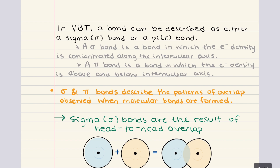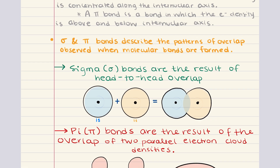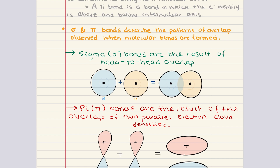When two atoms bond to form a compound, their atomic orbitals interact to form molecular orbitals. A molecular orbital describes the probability of finding bonding electrons in a given space, and this formation is described by the overlap of two atomic orbitals — the greater the overlap, the stronger the bond. The signs of the lobes of these orbitals, positive and negative, play a crucial role in bonding. If the phases of the two overlapping atomic orbitals are the same, a bonding orbital forms; if they are different, an anti-bonding orbital forms.